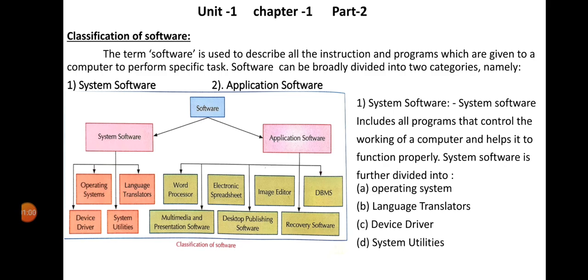System software includes all programs that control the working of a computer and help it to function properly. Without system software we cannot run the computer — first we have to install the system software, then we can operate the computer and other programs. System software controls the whole computer system. It is further divided into four categories.